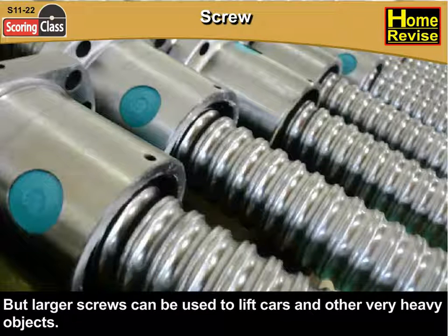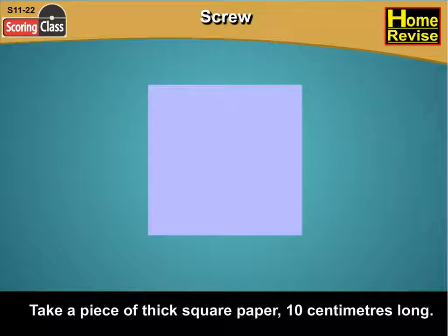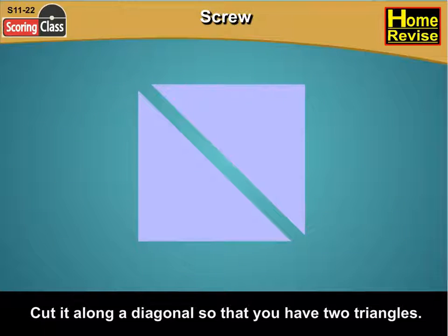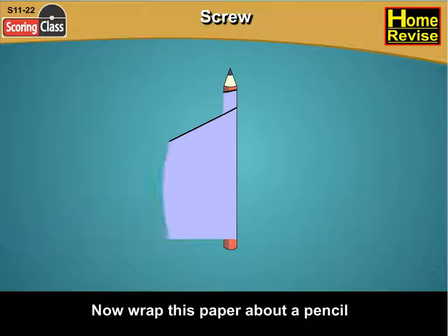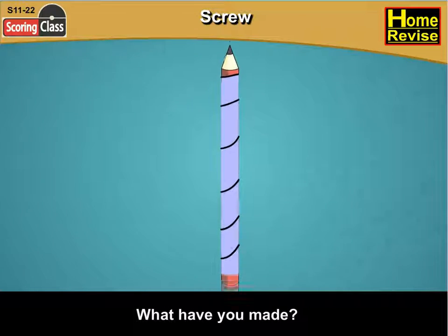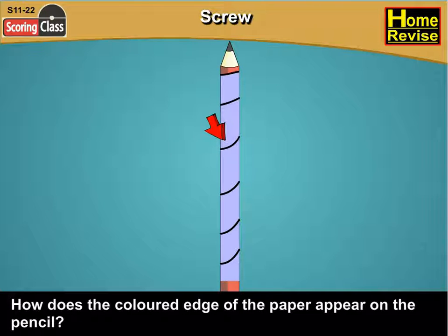Now here's something for you to do. Take a piece of thick square paper, 10 cm long. Cut it along a diagonal so that you have two triangles. Take one of the paper triangles and color its longest edge. Now wrap this paper about a pencil. What have you made? How does the colored edge of the paper appear on the pencil?